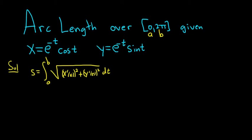So the way I do the product rule is as follows. Given f times g, I think of f as the first and g as the second. So I think of it as the derivative of the first times the second, plus the first times the derivative of the second.